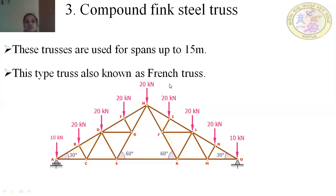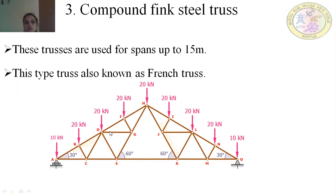Compound fink steel trusses include web members, horizontal struts, and inclined struts. These trusses are used for spans up to 15 meters and are also known as French trusses. The truss features inclined members, horizontal rafters, horizontal tie beams, and inclined struts.